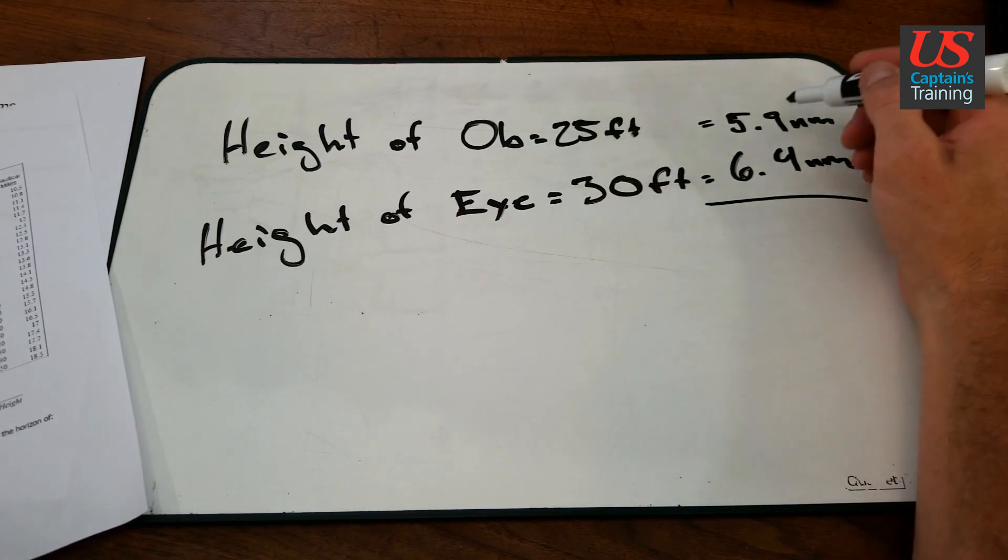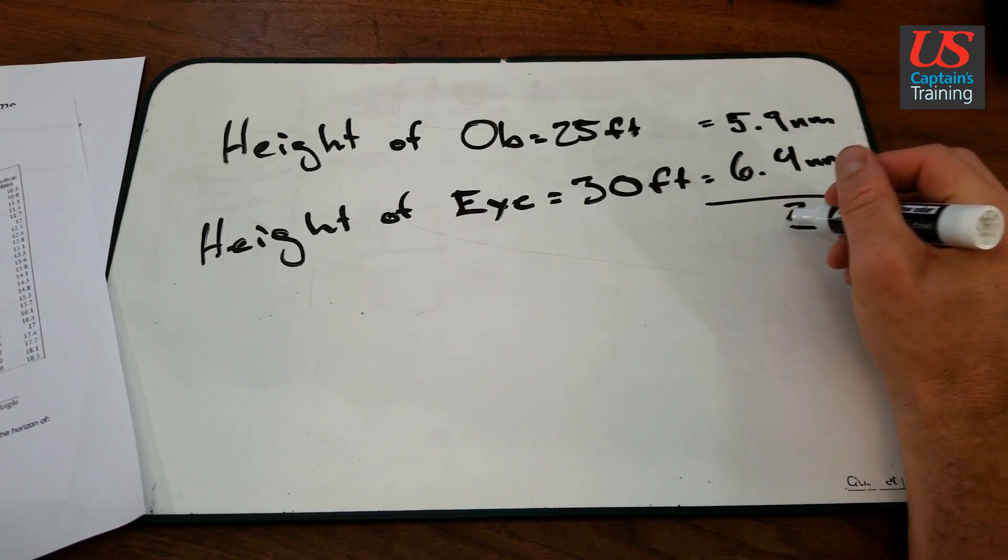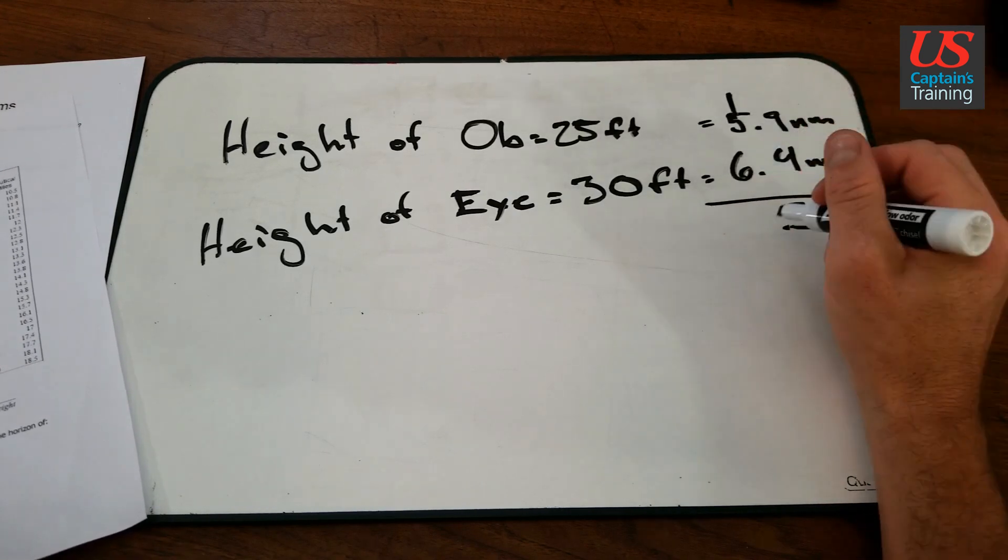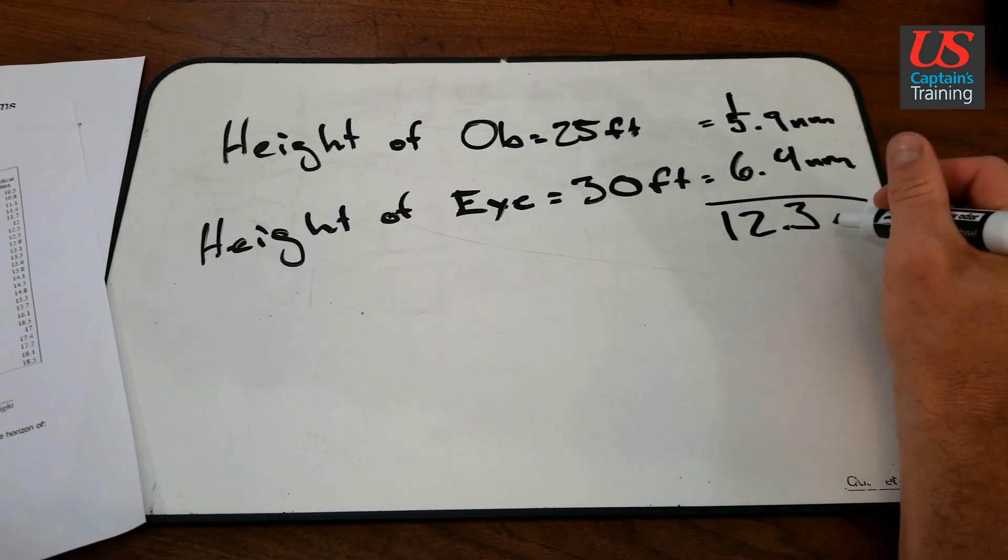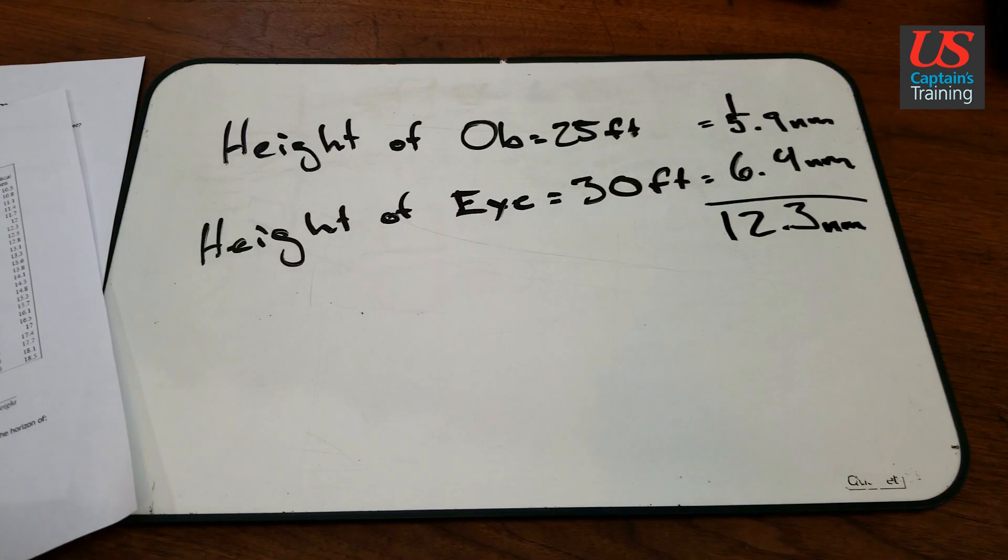We add those up. 9 plus 4 is 13. 6 plus 6 is 12 nautical miles to the horizon is what we got.